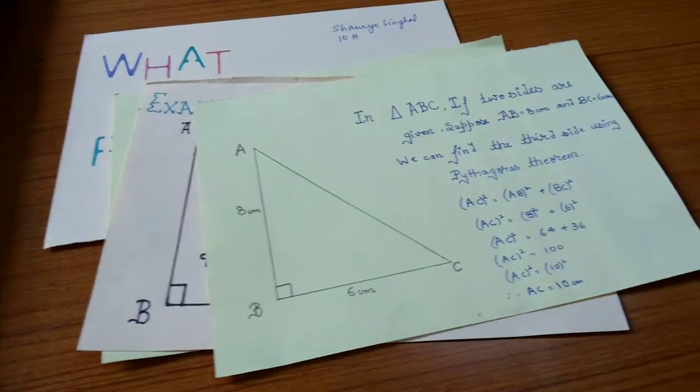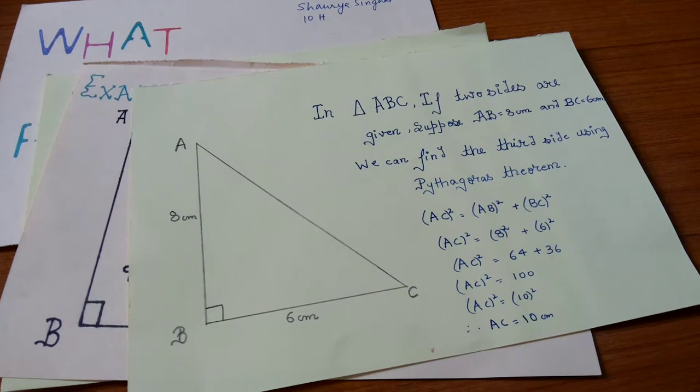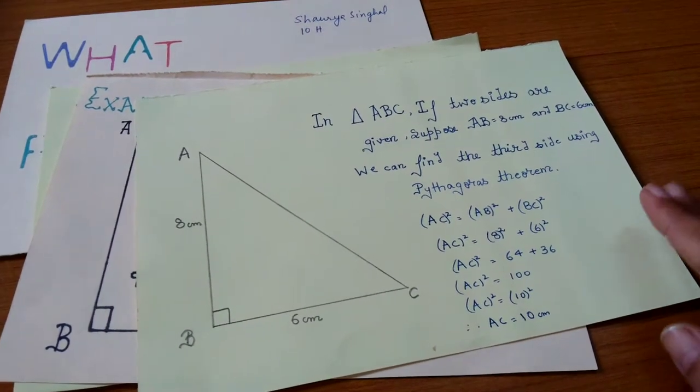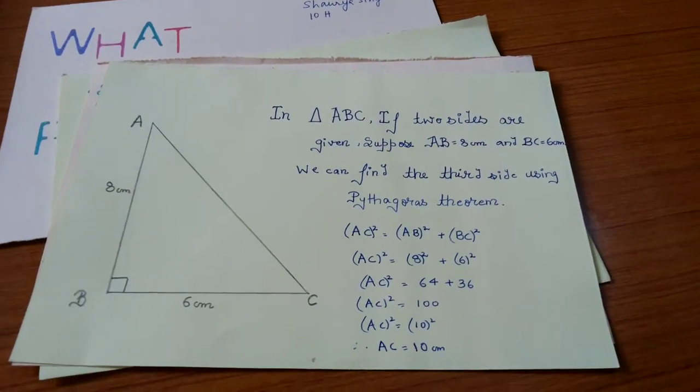If we know two sides of a right triangle ABC, we can find the third side by using Pythagoras theorem.